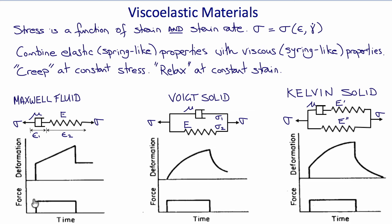These graphs show what happens when a constant force is applied to these models and then removed. In a Maxwell fluid, the spring instantaneously stretches, giving immediate deformation. Then, because there's a dashpot, the force continues to pull the syringe out indefinitely — the material flows. When the force is removed, the spring recoils but the syringe won't go back, so the material doesn't return to its original natural state. That's what makes the Maxwell model more like a fluid than a solid.